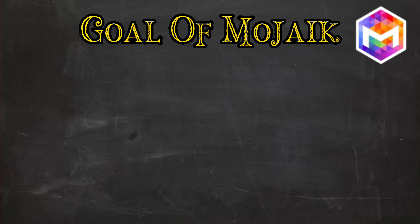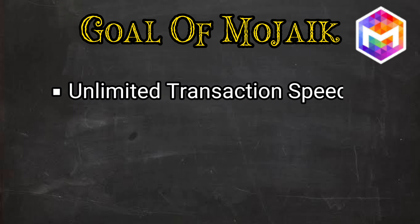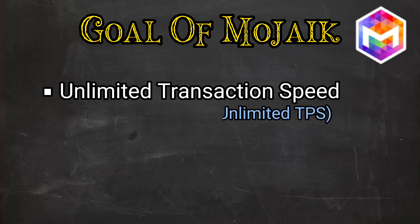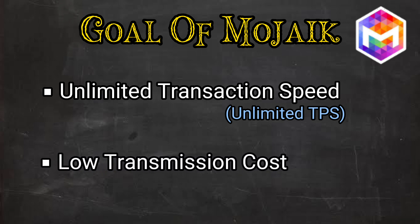Beside various other goals, there are two main goals of the Mojak platform. First, Mojak plans to provide unlimited TPS so that delays in blockchain transactions can be eliminated. The second goal is to provide the lowest transmission cost. Mojak's initial transaction fee will be 0.021 fee coin per transaction, which is extremely low. This transmission cost will further decrease with the increment in the number of transactions per second.